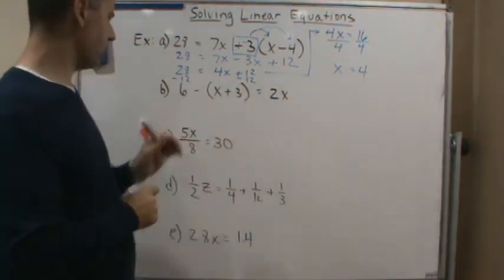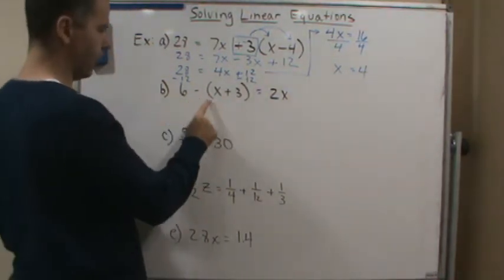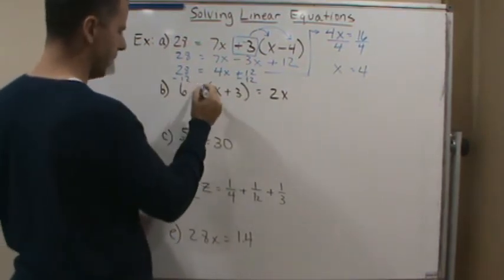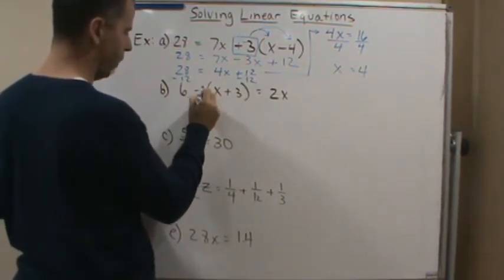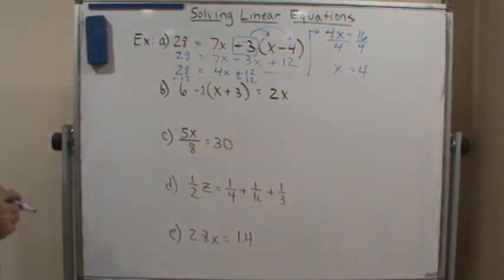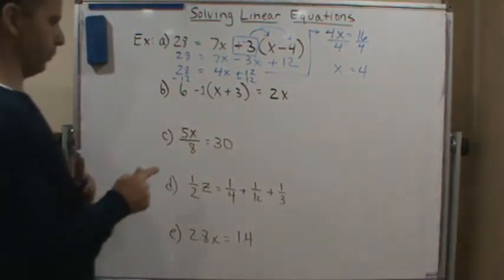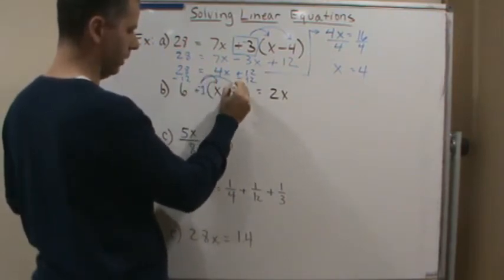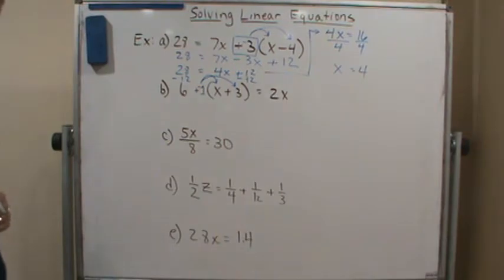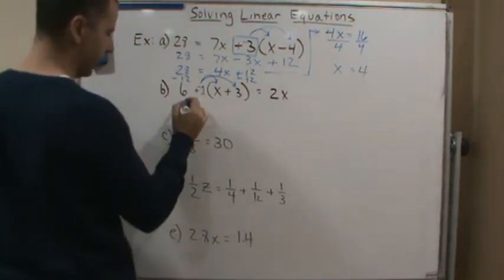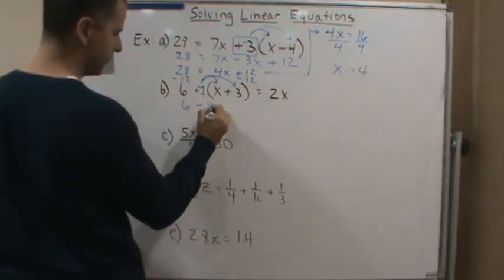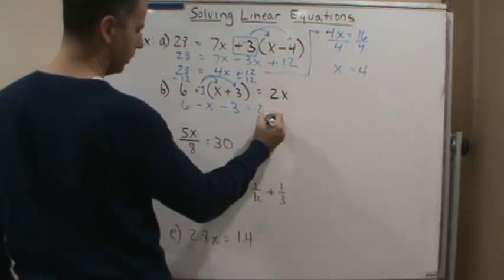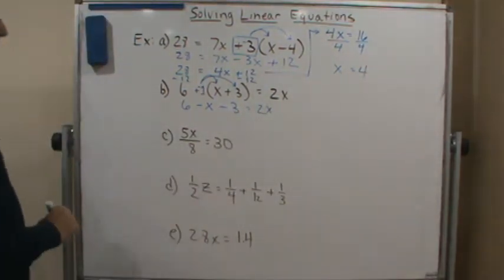Now let's look at Part B. Here we're subtracting off this entire thing in parentheses, so remember to pretend there's a 1 here — basically we're going to be distributing a negative 1 using the distributive property. This will become 6 minus x minus 3 equals 2x.